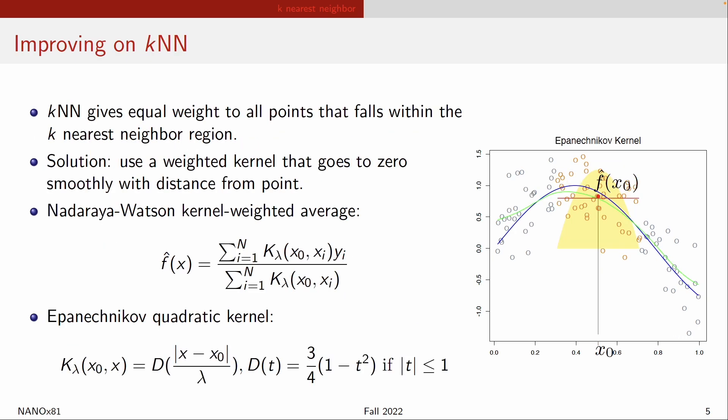You can adapt the k-nearest neighbor by using a weighted kernel. With a simple k-nearest neighbor, anything that falls within the neighborhood is given equal weight. In a weighted kernel, you apply a function — like the yellow function shown here — that goes to zero at the edges of the kernel. Points closer to the prediction target get a high weight, and points further away get a lower weight, eventually reaching zero weight at the edge.